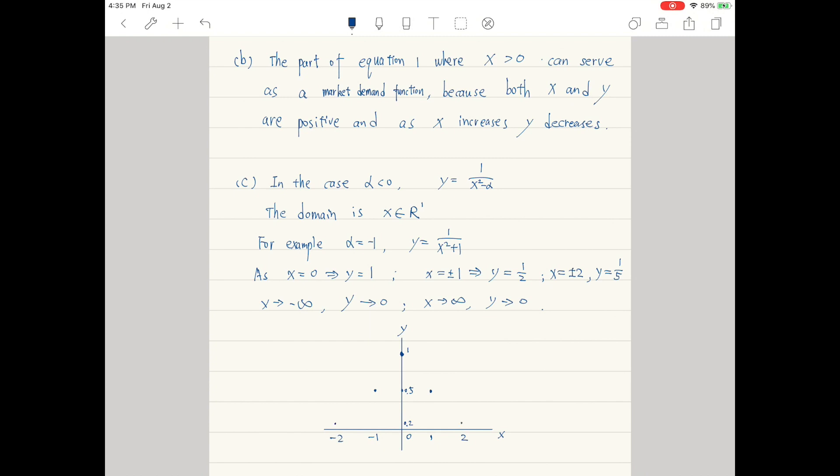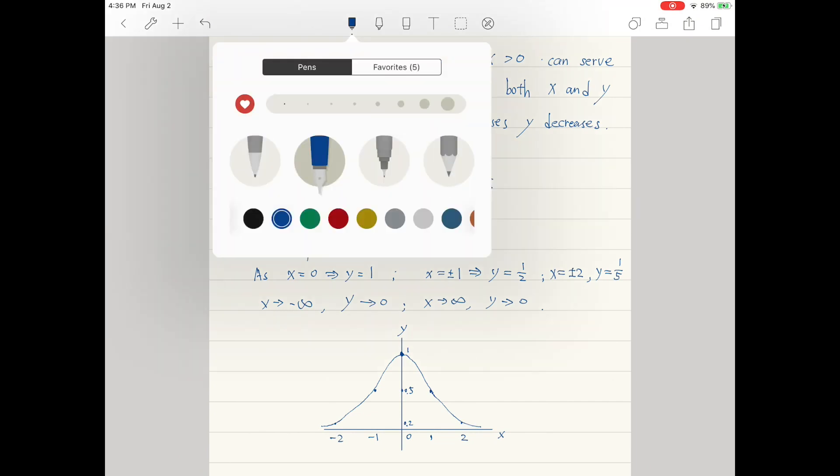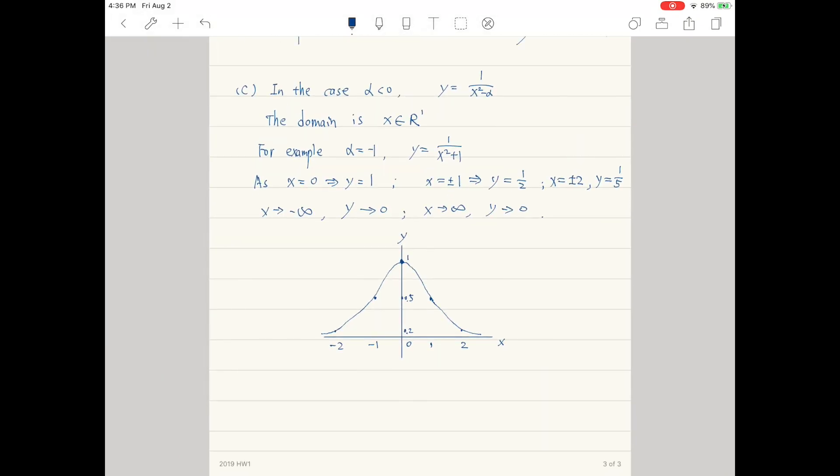For part c, we consider two cases. In case one, when a is negative, the domain is the set of all real numbers. You can assign a number to a and draw a graph. When you write down the global maximum, remember to write it correctly. It's an expression of a instead of the number assigned.